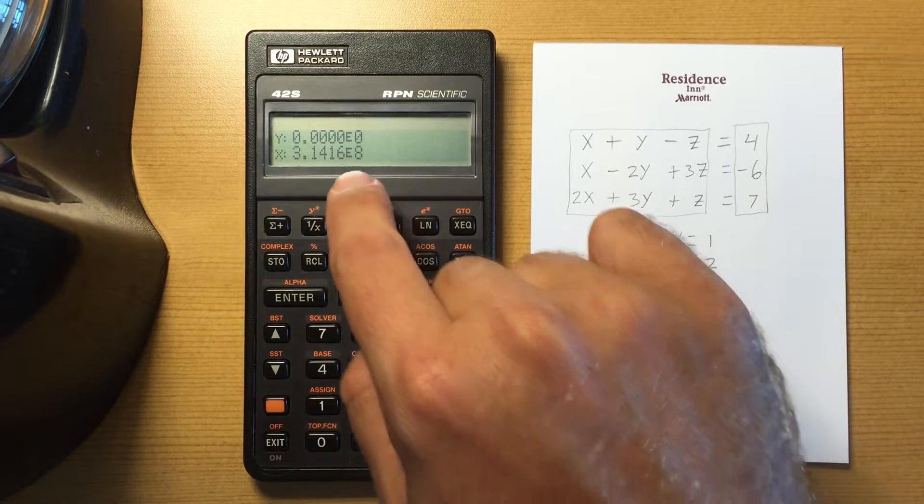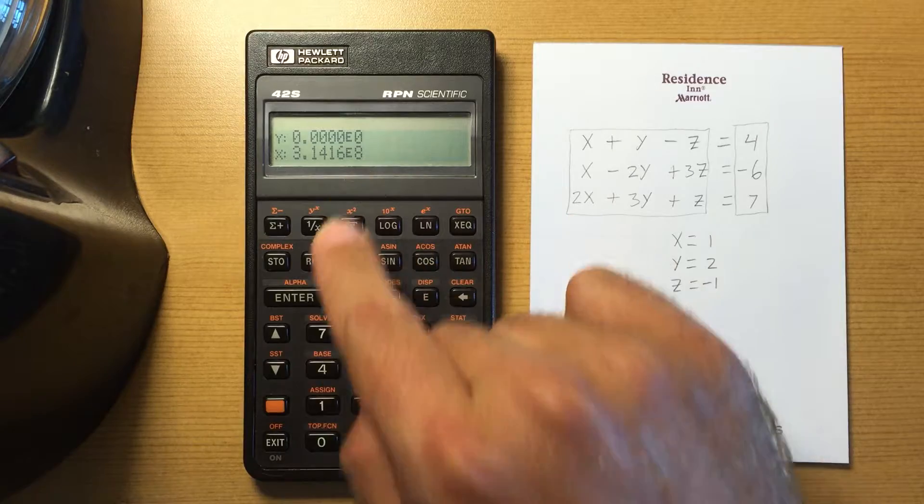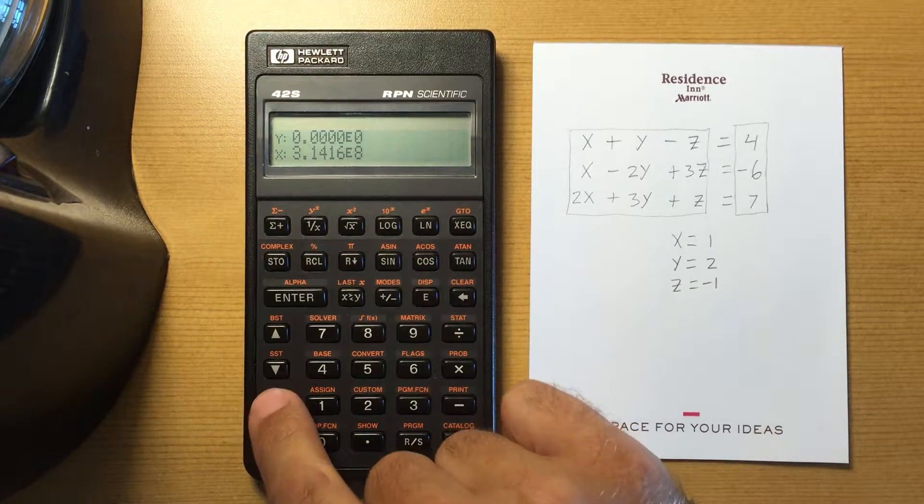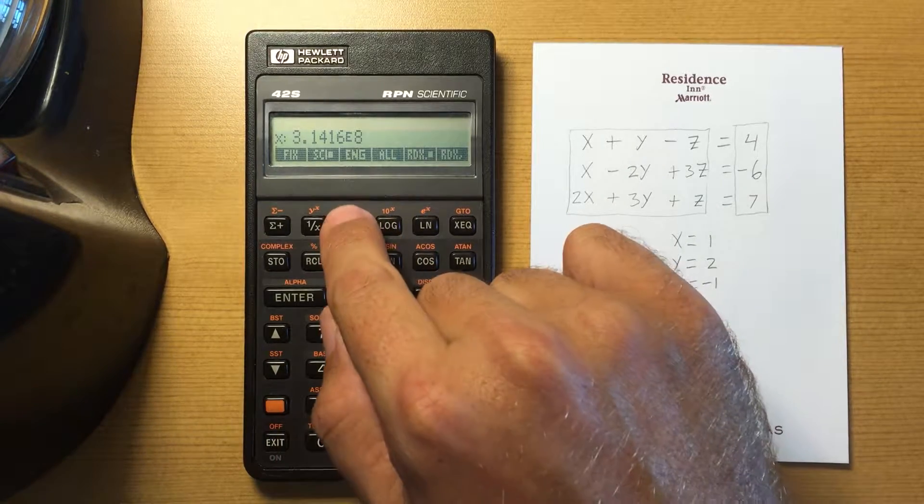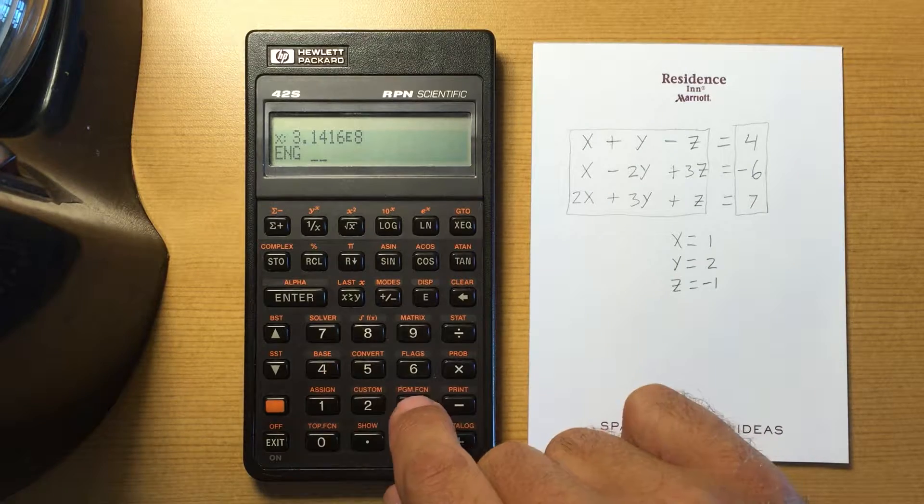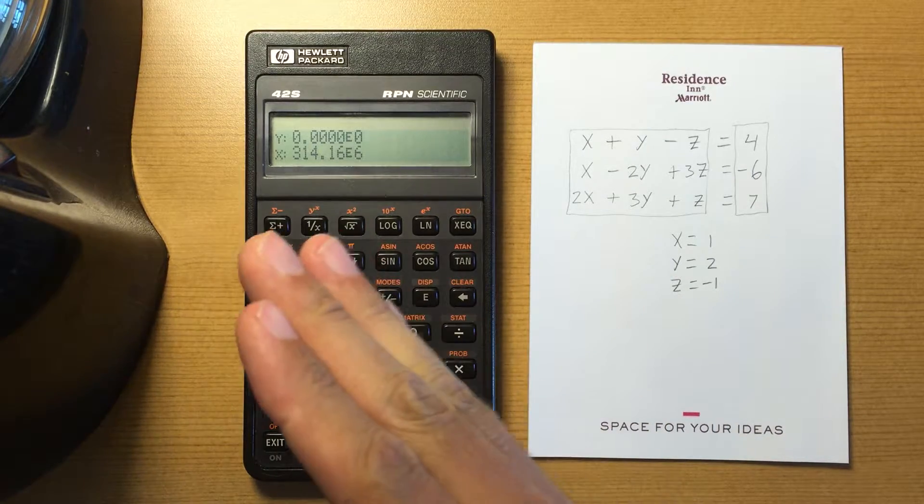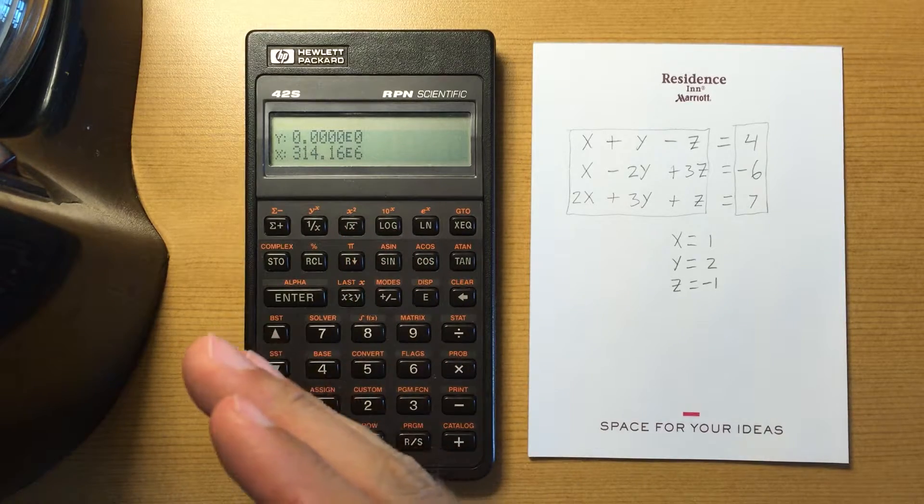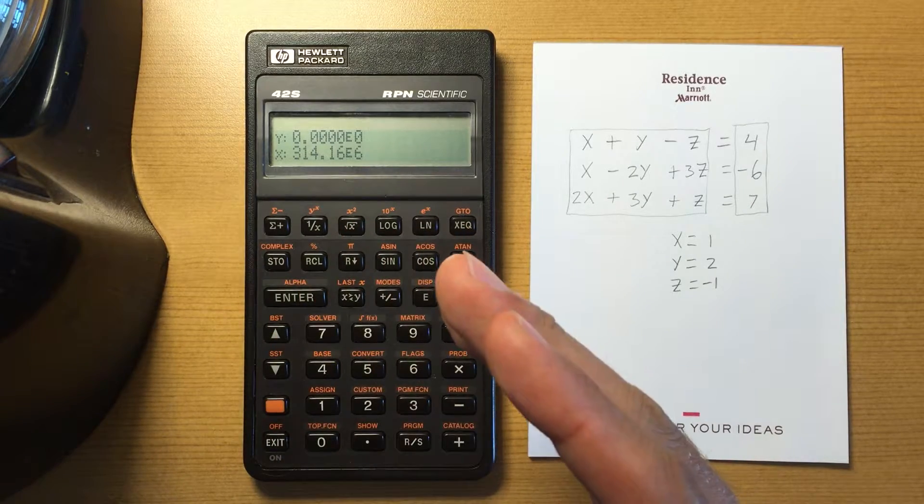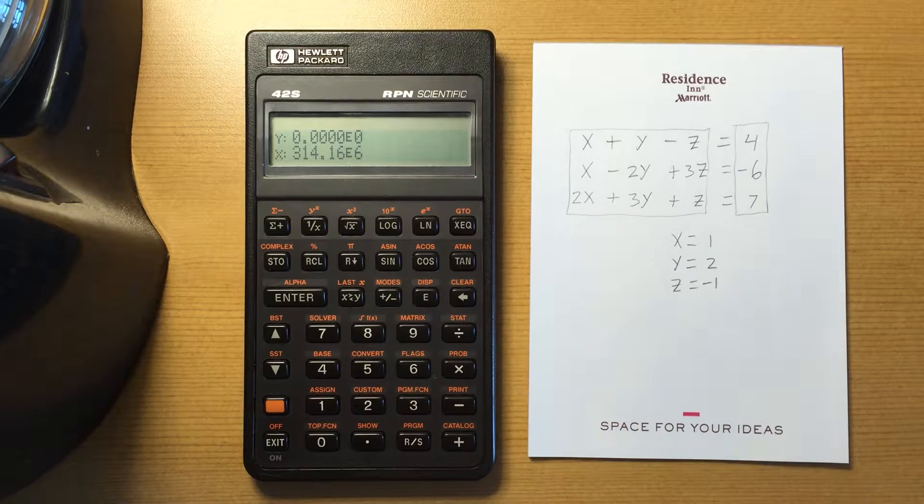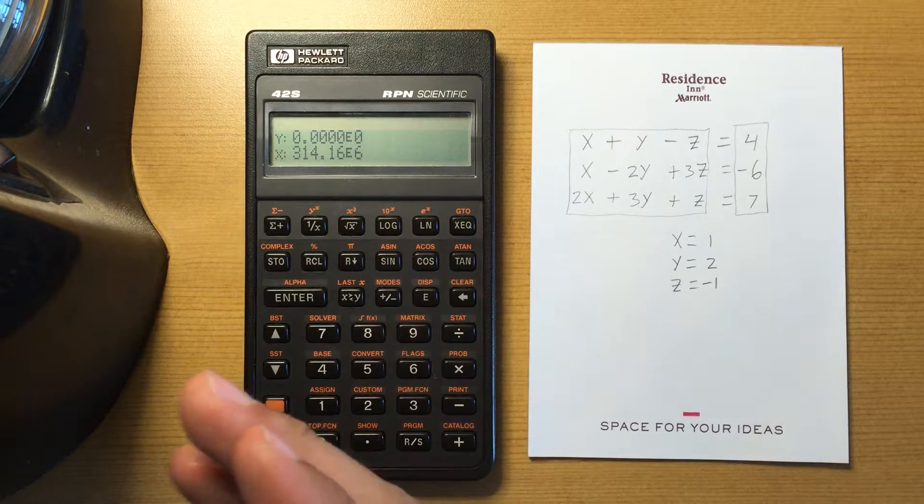Now if I do engineering notation and let's do that four as well, engineering notation will do multiples of three. So it'll do times ten to the third, times ten to the sixth, times ten to the ninth, times ten to the minus third, minus six, minus ninth.